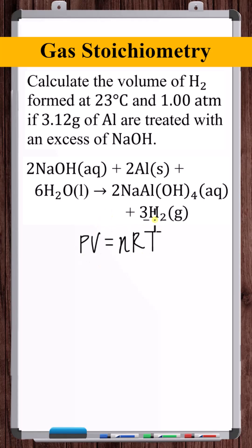What we need to do is use the ideal gas law to calculate the volume of this H2 gas produced if 3.12 grams of aluminum are consumed in this reaction. Solving the ideal gas law for volume, what we need is the temperature that this gas body is at, which is given to us, 23 degrees Celsius, and the pressure that this gas body is at, which is also given to us.